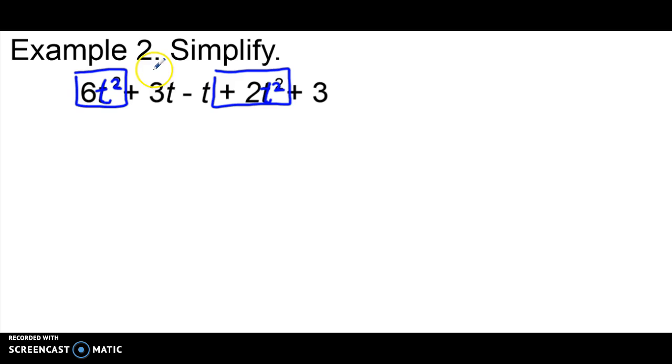So I'm going to go back to the beginning and now I'm going to go to the first term that doesn't have a shape around it and that's a positive 3t. So I'm going to look through my expression and see if there are any like terms. And sure enough, there's a minus t. They both have the same variable t and they do not have exponents. So then what we'll see at the very end is that there's one more term left over which is a positive 3.